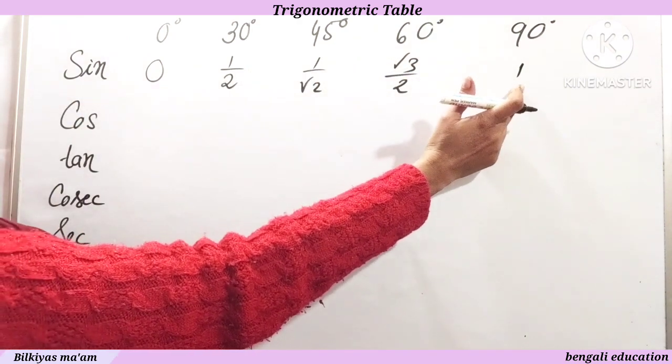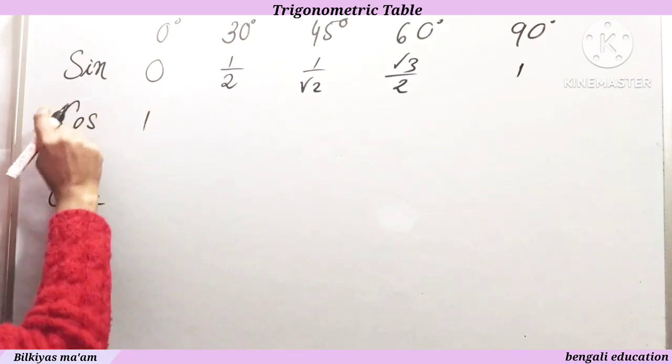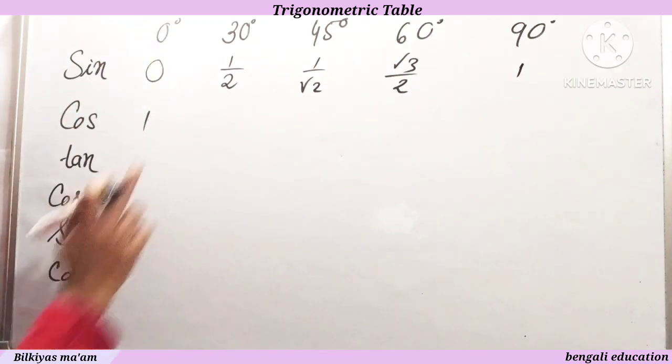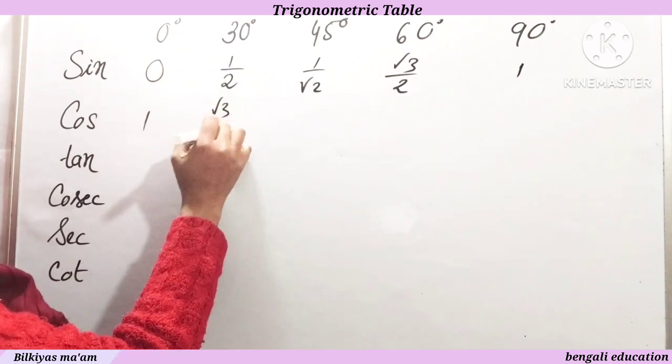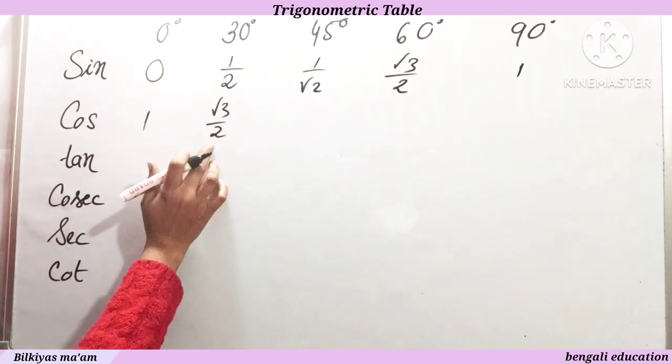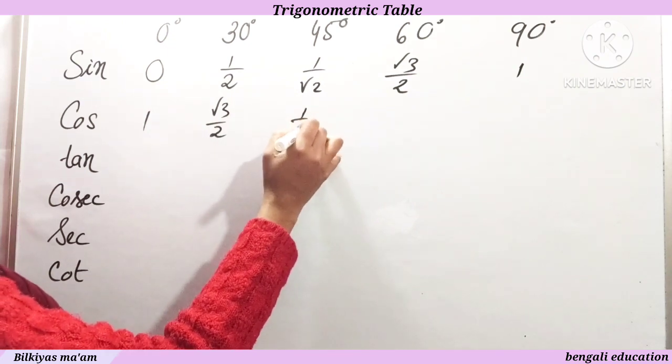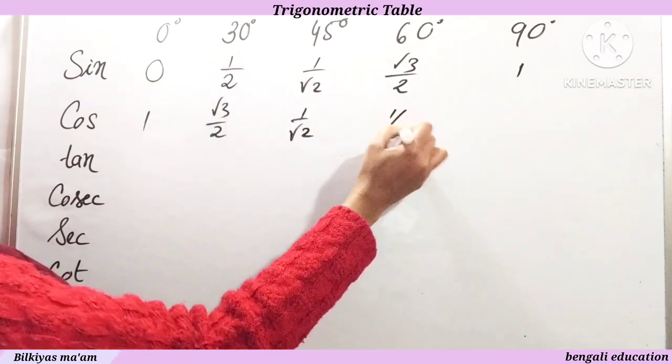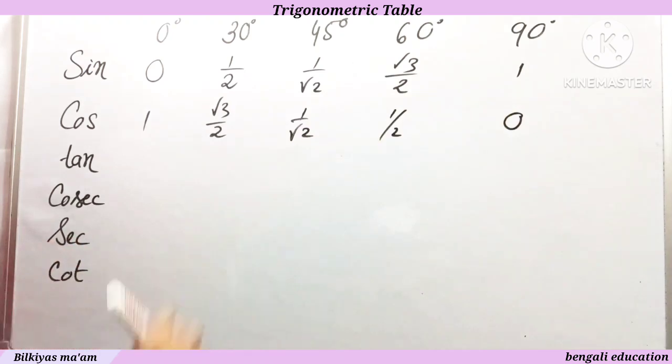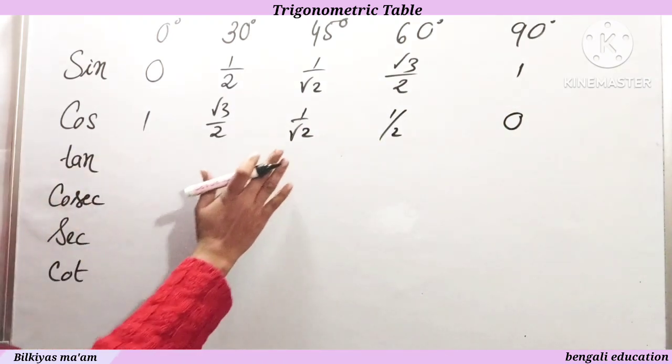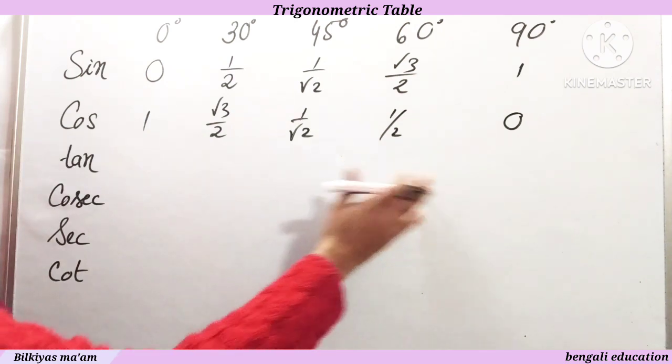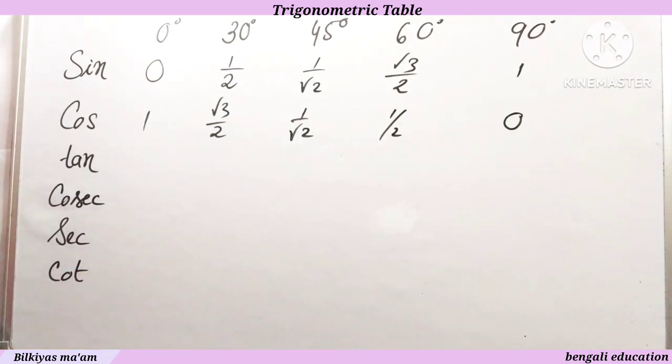So you can see the 2. The last value is 1, then it will be cos 0 is 1. So you can see root 3 by 2, cos 30 is root 3 by 2. So 1, root 3 by 2, then you can write 1 upon root 2, then half, and then 0. So cos 0 is 1, cos 30 is root 3 by 2, cos 45 is 1 upon root 2, cos 60 is half, cos 90 is 0.